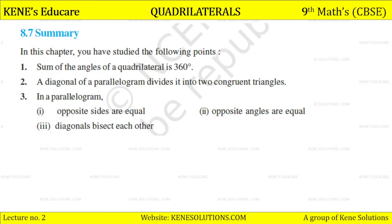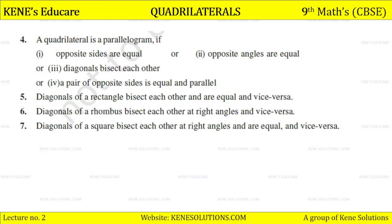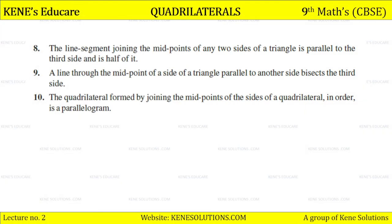In this chapter, you have studied the following points: Sum of angles of a quadrilateral is 360 degrees. A diagonal of a parallelogram divides it into two congruent triangles. In a parallelogram, opposite sides are equal, opposite angles are equal, and diagonals bisect each other. A pair of opposite sides is equal and parallel. Diagonals of a rectangle bisect each other and are equal. Diagonals of a rhombus bisect each other at right angles. Diagonals of a square bisect each other at right angles and are equal. The line segment joining the midpoints of any two sides of a triangle is parallel to the third side and is half of it. A line through the midpoint of a side of a triangle parallel to another side bisects the third side. The quadrilateral formed by joining the midpoints of the sides of a quadrilateral in order is a parallelogram.